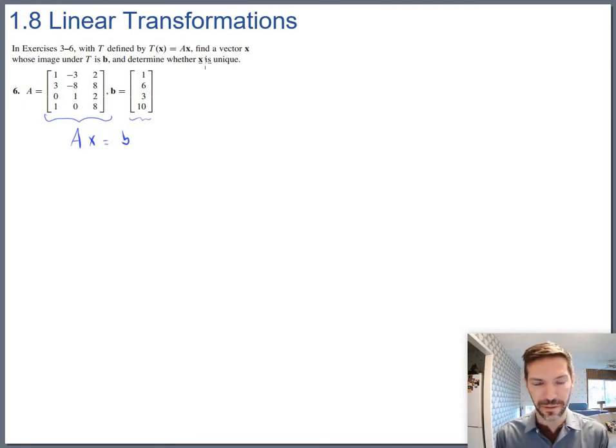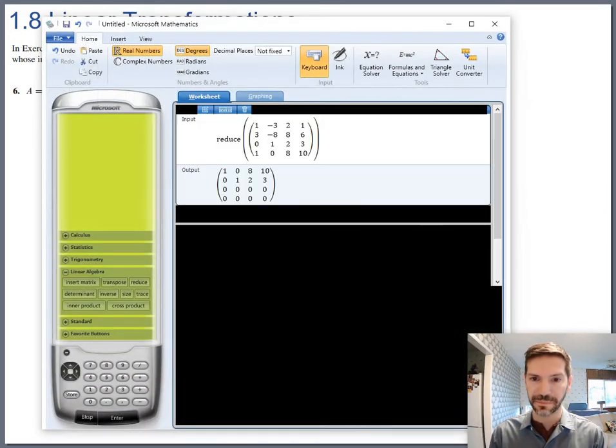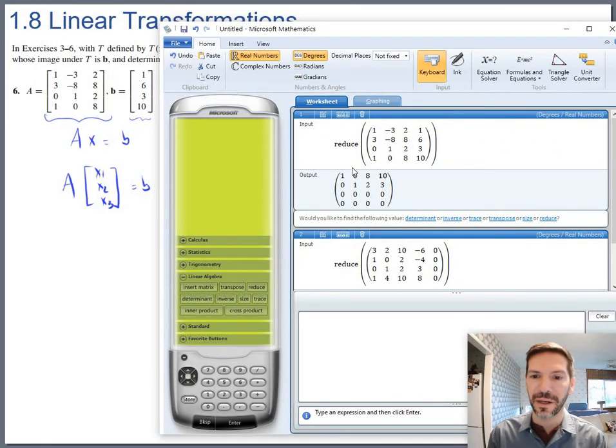We are still looking for A times x1, x2, x3 to produce b. Ultimately we're going for the augmented matrix though. You would dump all of that into your favorite matrix calculator. So I've got, make sure I've got the right one here.